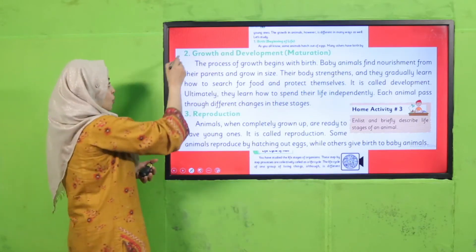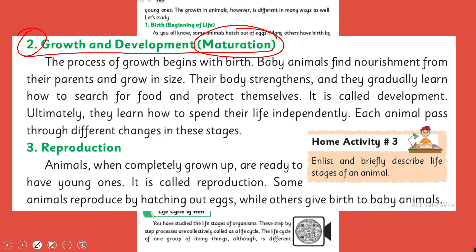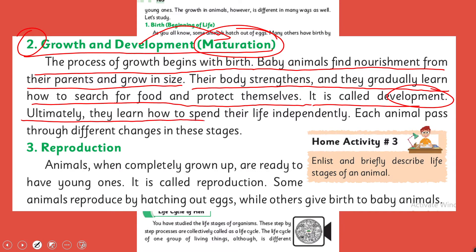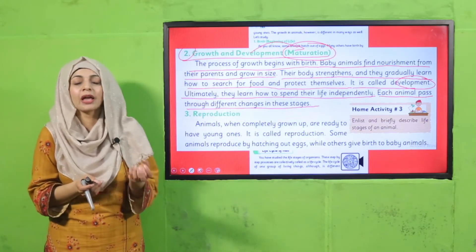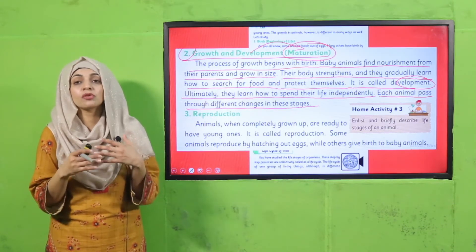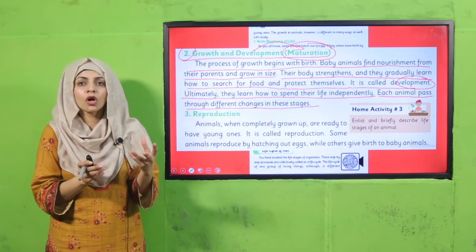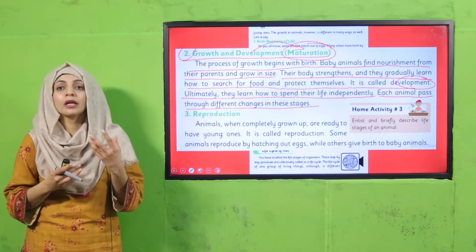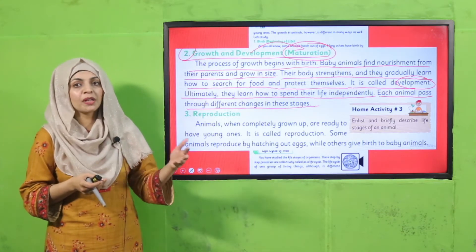The second stage is growth and development — maturation. The process of growth begins with birth. Baby animals find nourishment from their parents and grow. Their body strengthens and they gradually learn how to search for food and protect themselves. This is called development. Ultimately, they learn how to spend their life independently. Each animal passes through different changes in these stages. Different organs and body parts start developing, and they begin eating their own food as they mature.